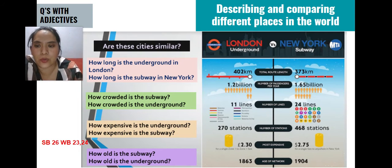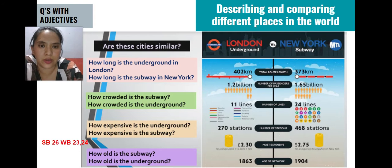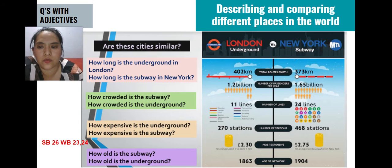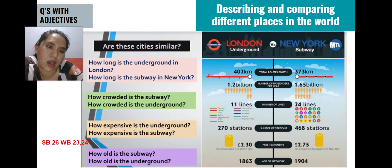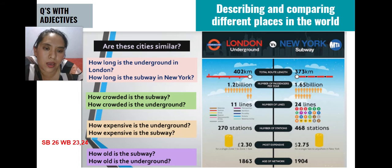What I want you to pay attention to is that we are combining, or adding, an adjective to our questions. We use them to make more specific questions about numbers and figures. How long, how crowded, how expensive, how old — and we can also say how far, how big, how beautiful. The combinations are endless. Pay attention to the numbers here, because we are using them in our specific questions for this part of the unit and the week.